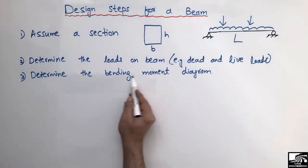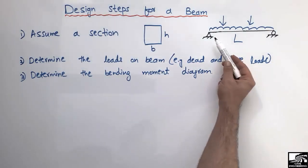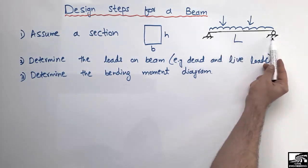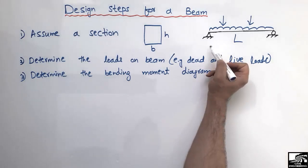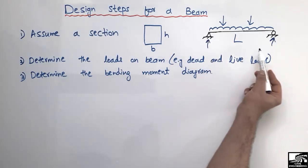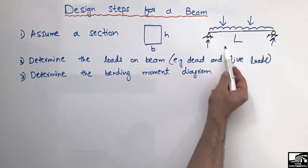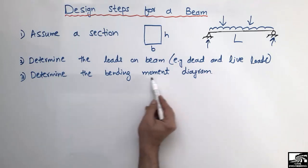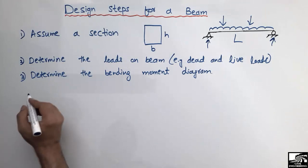The third step is to determine the bending moment diagram. After you have the beam with length L and all types of loads, you find the support reactions and draw the bending moment diagram. From the bending moment diagram we can proceed to the next step.